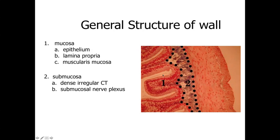Lining the side against the lumen is the mucosa. We have a biologically defined space lined by an epithelium, which changes dramatically as we go from organ to organ within the Digestive Tract. Underlying the epithelium is the lamina propria — a loose connective tissue normally with lots of lymphocytes giving a very basophilic staining appearance — and then a muscularis mucosa, a thin layer of smooth muscle that contracts to bring the mucosal lining closer to materials in the lumen.